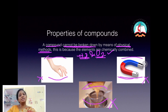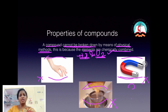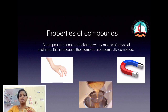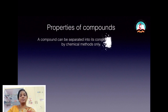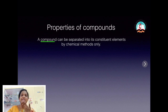Then, if we want to separate the constituent elements, how is it possible? We have separate methods to separate the constituents from a compound. That is the fourth property: a compound can be broken down into its constituent elements only by chemical methods.